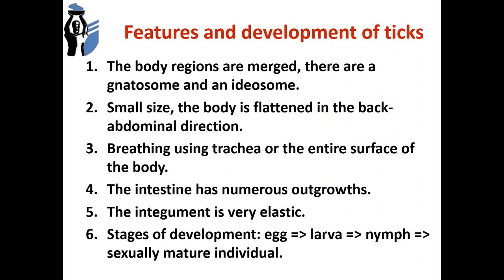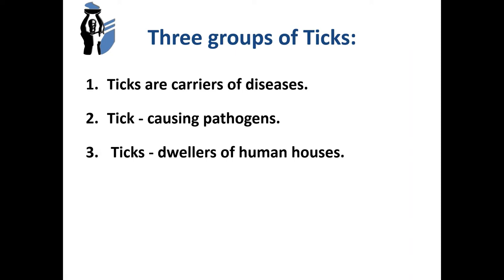The next representatives of class Arachnoidea are individuals of superorder Acarina, or ticks. Features of tick development: body regions are merged — there is a gnathosoma and idiosoma. Small size; the body is flattened in the dorso-abdominal direction. Breathing occurs via trachea on the anterior surface of the body. The intestine has numerous outgrowths; the integument is very elastic. Stages of development: egg, larva, nymph, sexually mature individual. There are 10,000 species of ticks, subdivided into three groups: carriers of diseases, causative pathogens, and dwellers of human houses.